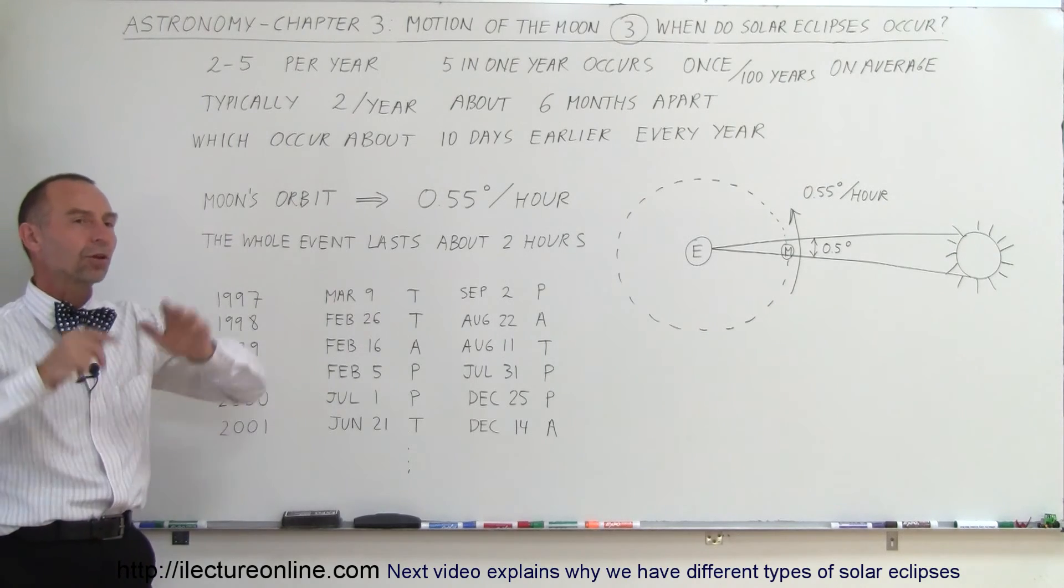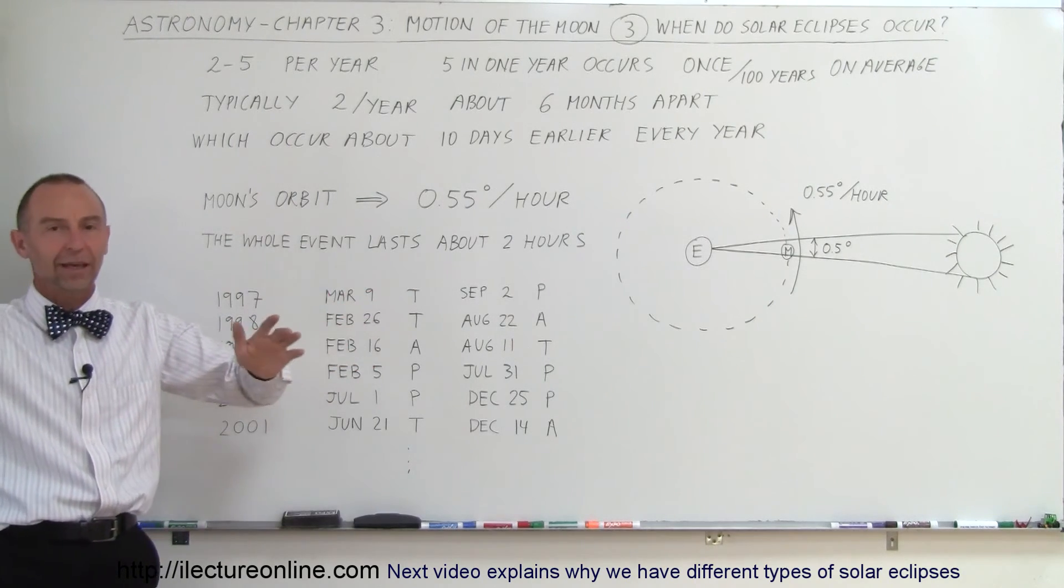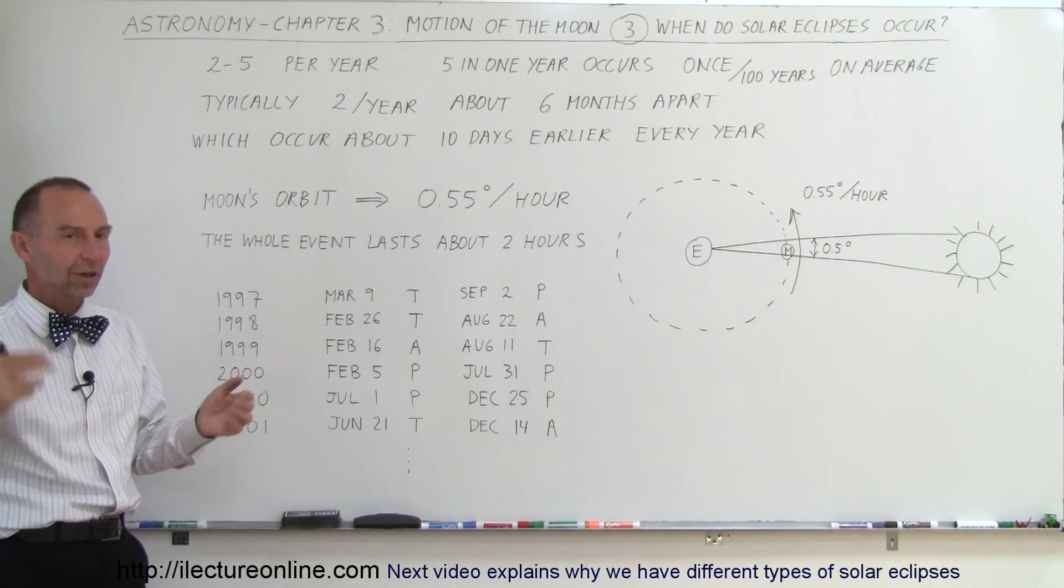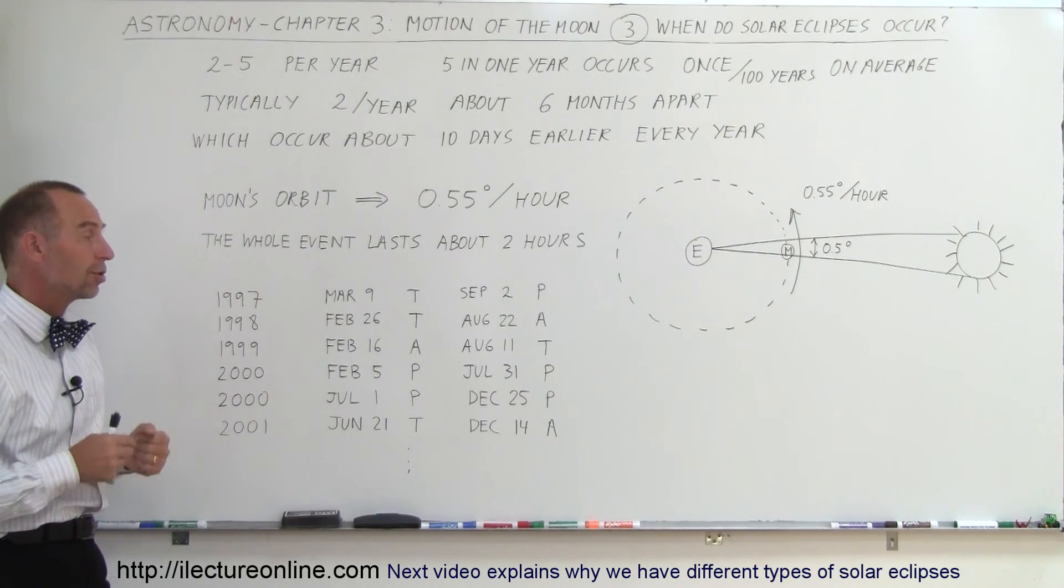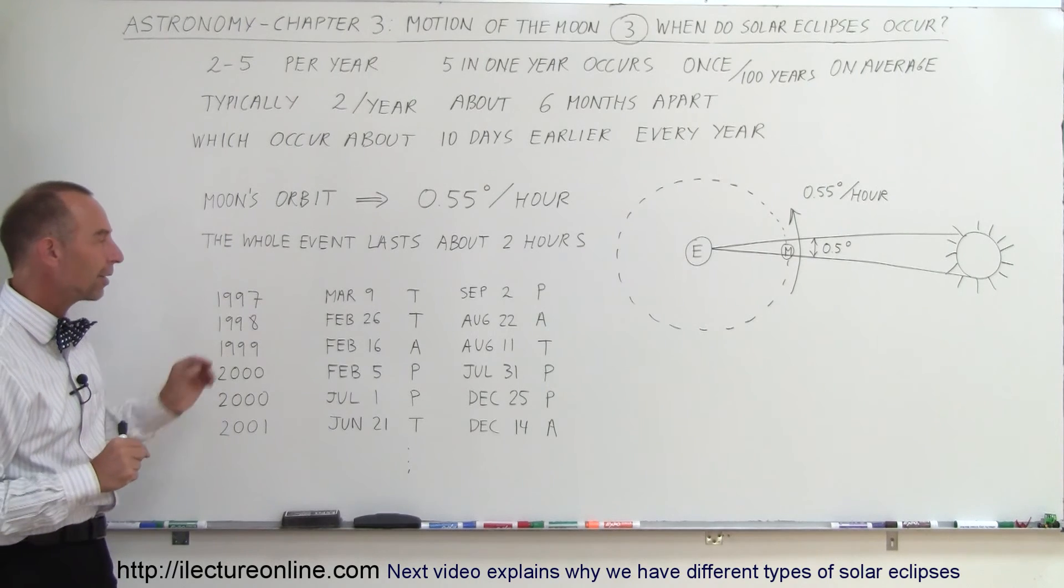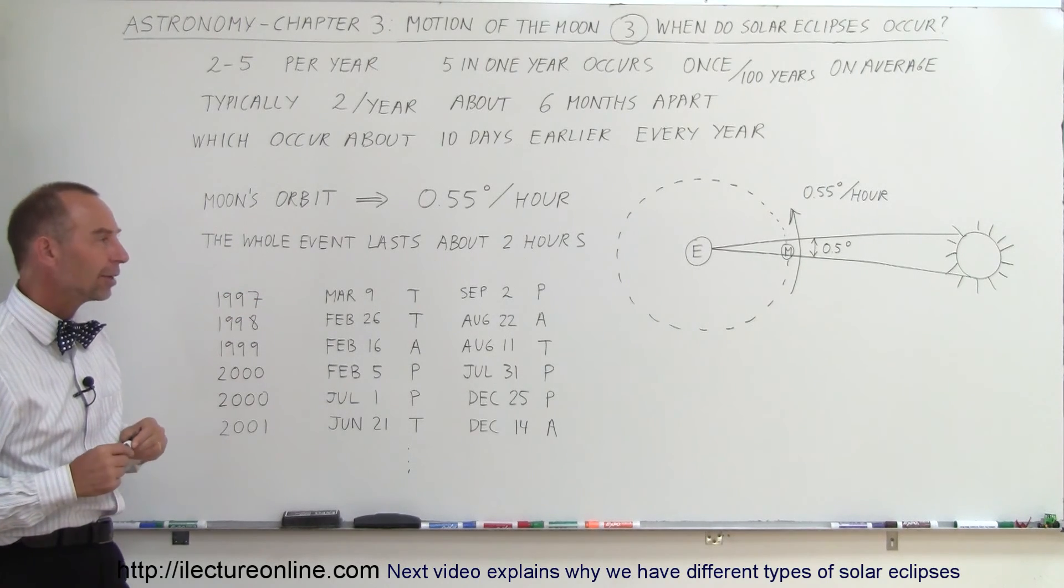So you can't just say solar eclipses only happen in March and in September or March and October, anything like that. That's not really the case. It just changes from year to year to year. But there does appear to be a pattern, and you can see how the pattern kind of works.